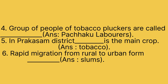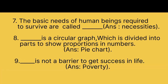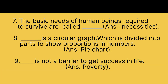Rapid migration from rural to urban areas forms Dash. Answer is Slums. The basic needs of human beings required to survive are called Dash. Answer is Necessities. Dash is a circular graph which is divided into parts to show portions in numbers. Answer is Pie chart. Dash is not a barrier to get success in life. Answer is Poverty.